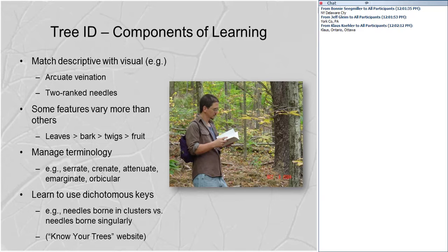The process of learning tree identification involves four components. First, you need to match a descriptive characteristic with a visual characteristic — it's about language and association. Second, figure out which features are most reliable: in my experience, leaves have the greatest variability. Less so is bark, less so is twigs, and even less so is fruit. If you can get your hands on fruit, that's often a very effective way to identify a particular tree.